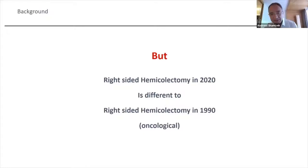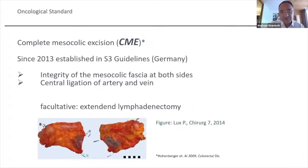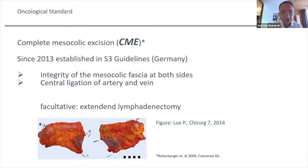It started almost 15 years ago. It was Hohenberger from Erlangen in Germany who invented the complete mesocolic excision. He transferred the concept of TME from the rectum to the colon. Since seven years, this technique has been established in the guidelines for laparoscopic and open colorectal colon surgery for carcinoma.